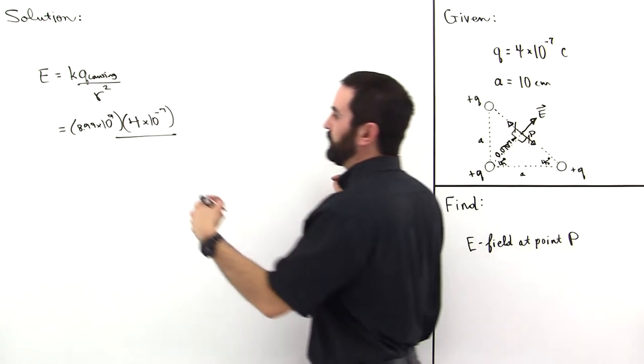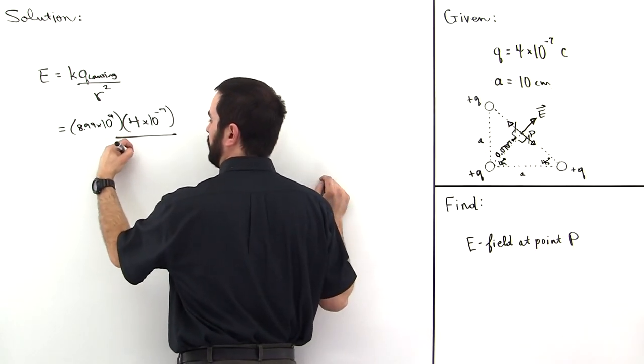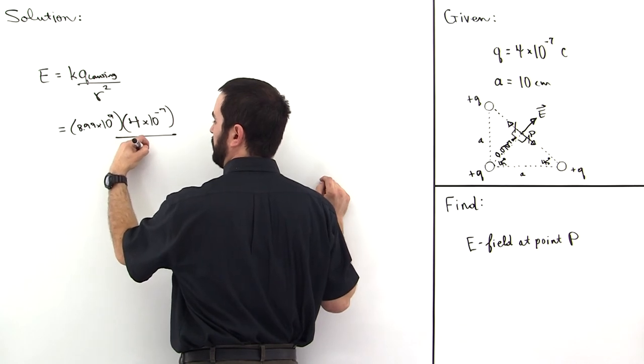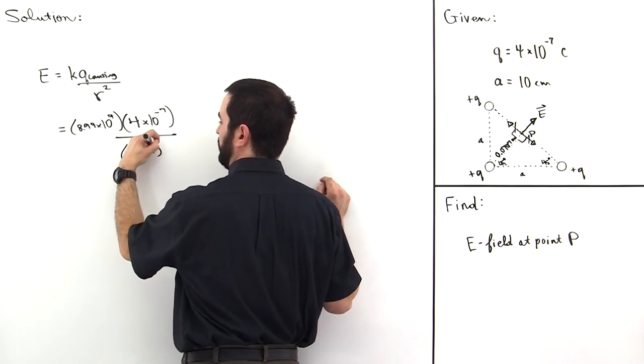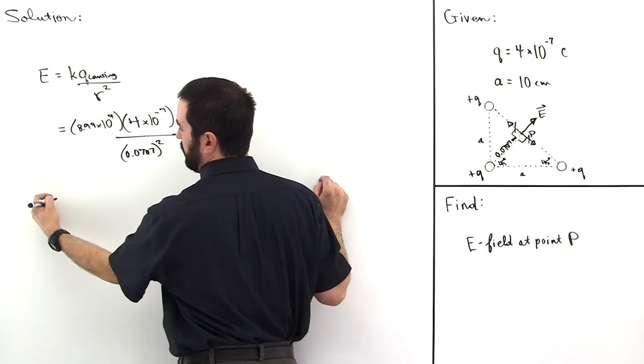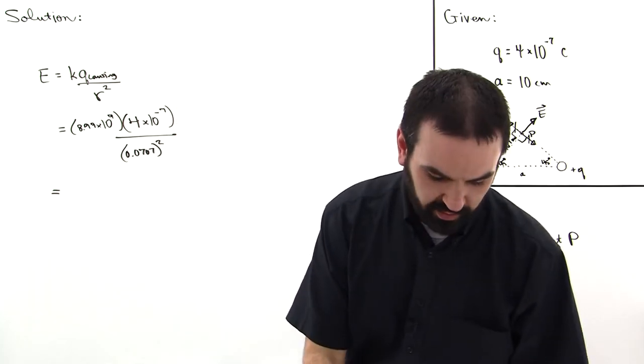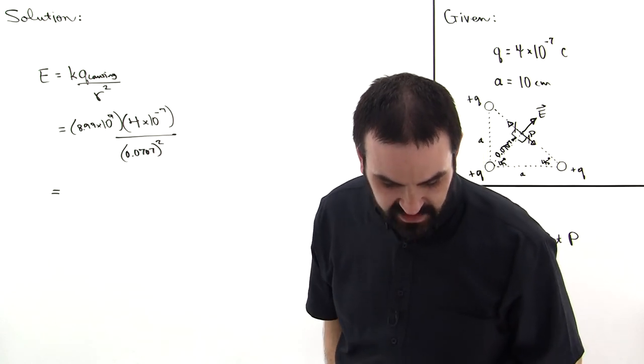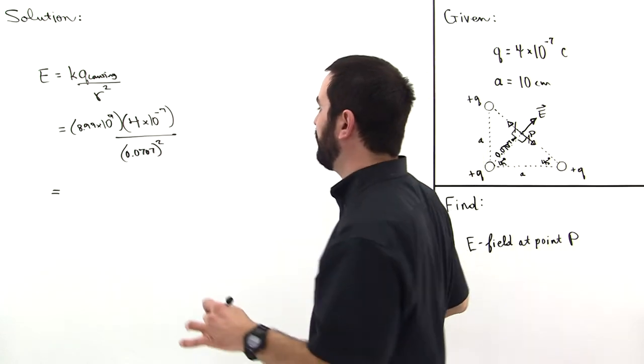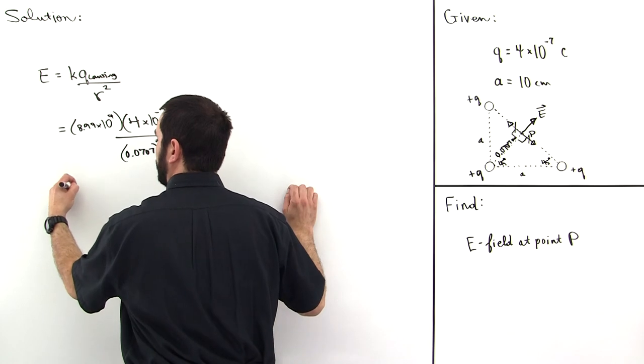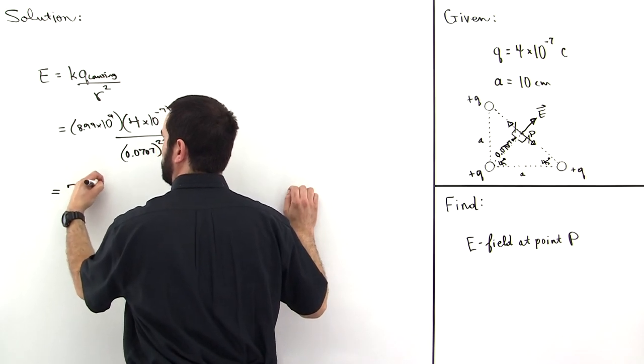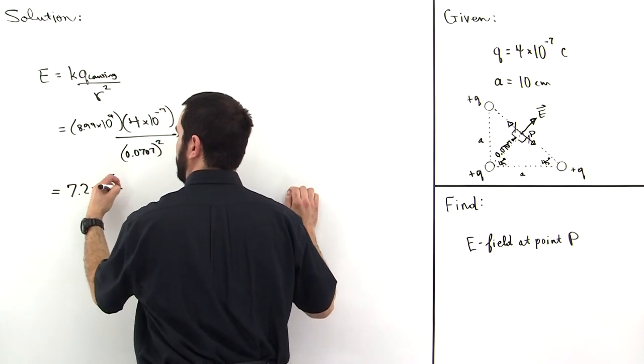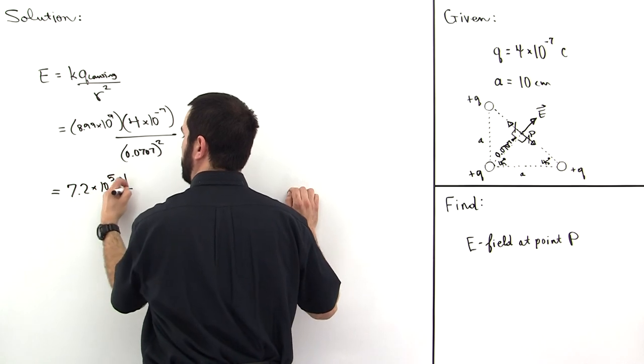Okay, so we'll put that here: 0.070, and then square that quantity. Keep your equal signs on top of one another as you move down the derivation, and you will find that this number is 7.2 times 10 to the fifth newtons per coulomb.